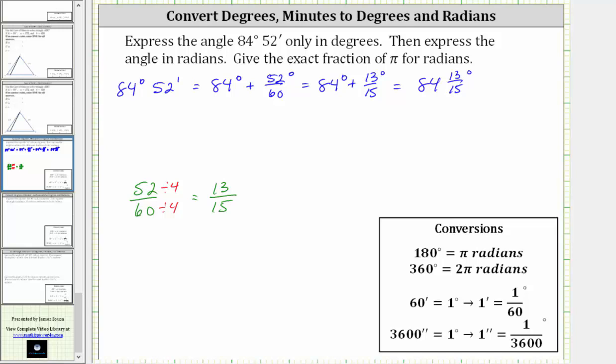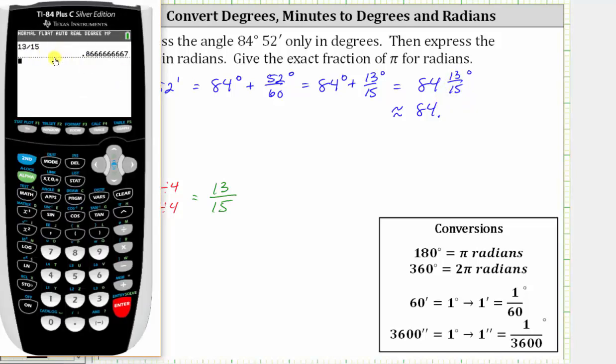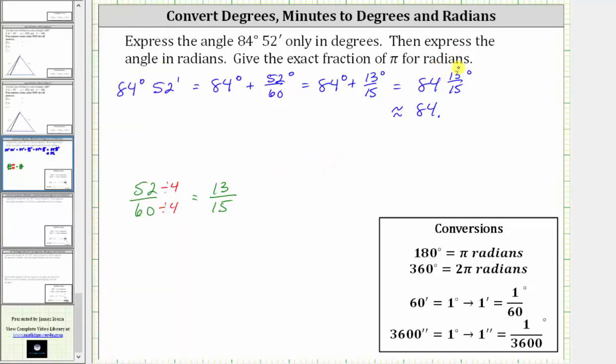Let's also get our decimal approximation for this. This is going to be approximately 84 point, and to find the decimal, we divide 13 by 15. 13 divided by 15 is approximately 0.8667 if we round to four decimal places. So we can also express the angle as approximately 84.8667 degrees. The mixed number is the exact measure in degrees, and here we have a decimal approximation.